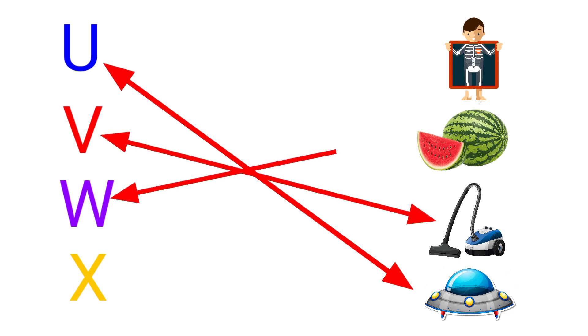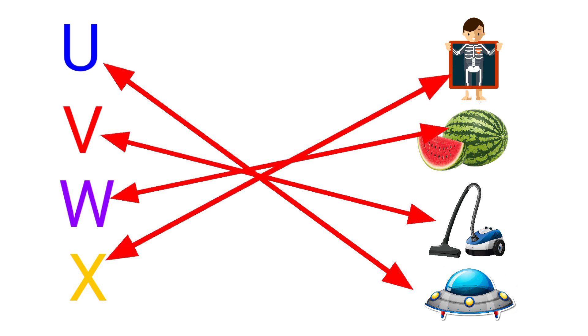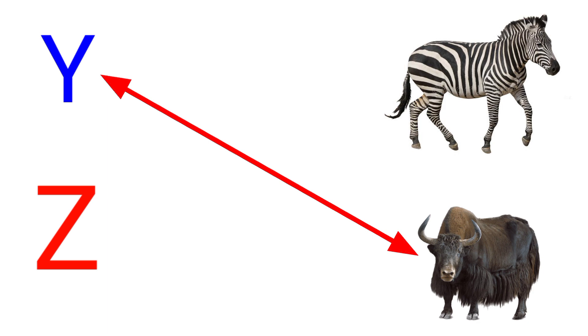W for Watermelon, X for X-Ray, Y for Yag, Z for Zebra.